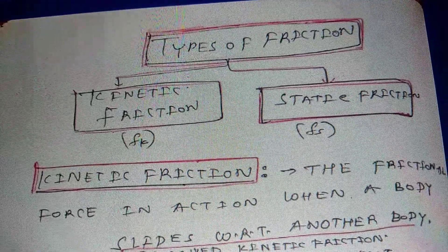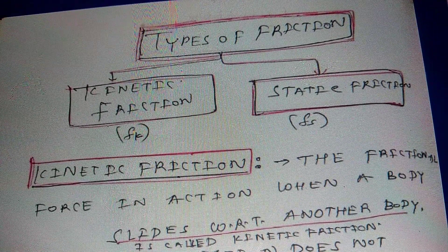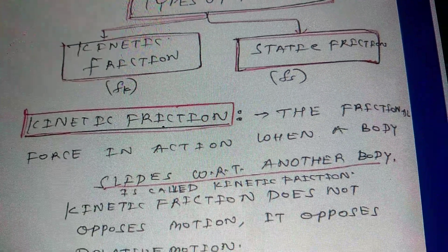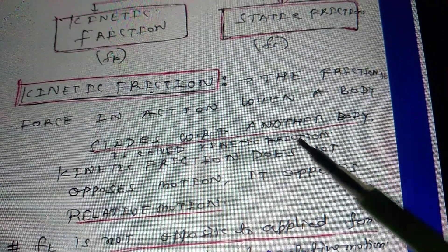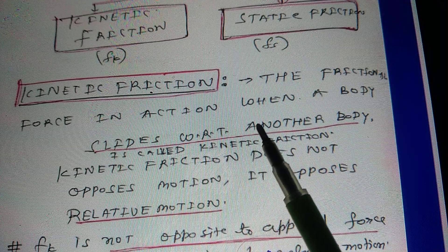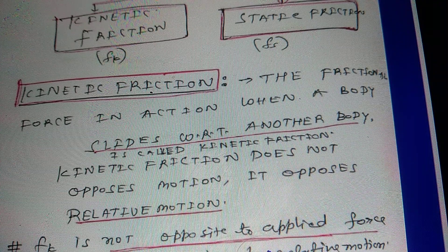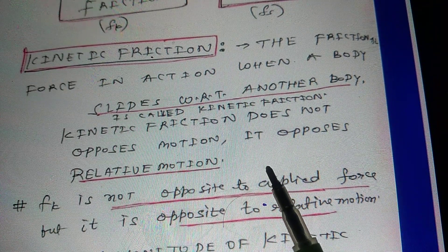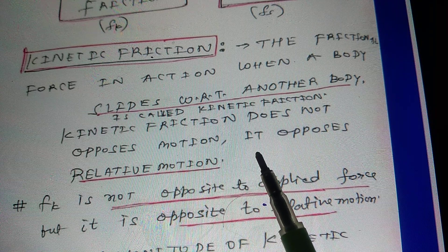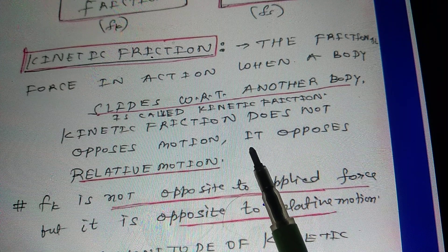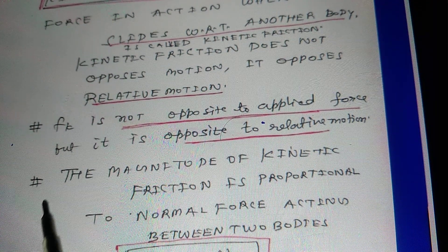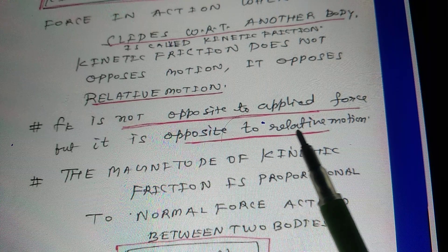Now, types of friction. There are two types: Kinetic friction and Static friction. Kinetic friction is the frictional force in action when a body slides with respect to another body. Kinetic friction does not oppose the motion — it opposes the relative motion. The direction of friction is decided by the motion of the block with respect to the surface in contact.